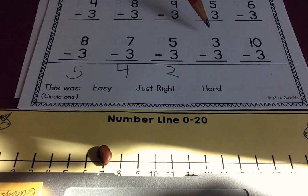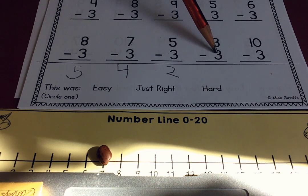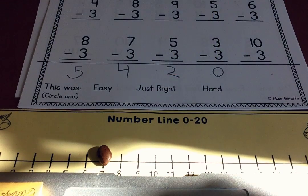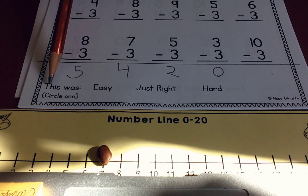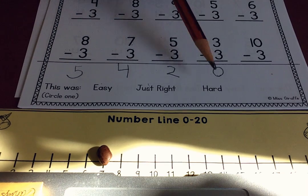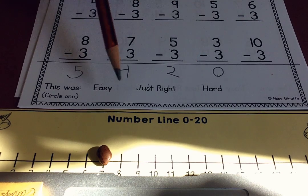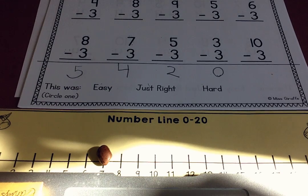Three take away three. I can picture that in my brain. I have three cookies and I eat three. I've got no cookies left. At the very bottom of your page, it asks you a question. This was easy, just right, or hard. When you finished your page, decide is it easy, just right, or hard. That will give your teacher some information.